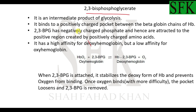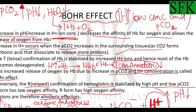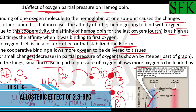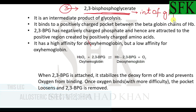Assalamu alaikum guys. Welcome back. This is a continuation of the previous lecture, where we covered hemoglobin as a buffer and the allosteric effects of H+ ion concentration and oxygen on hemoglobin affinity. In this lecture, we are going to look at the third allosteric effector: 2,3-bisphosphoglycerate (2,3-BPG), which is an intermediate metabolite of the glycolytic pathway.